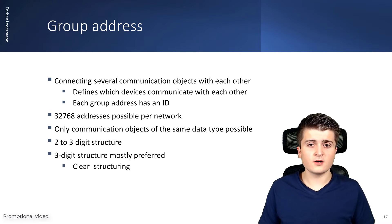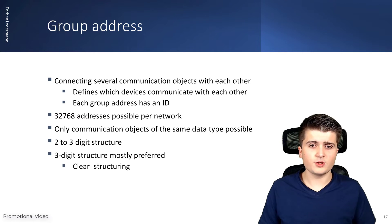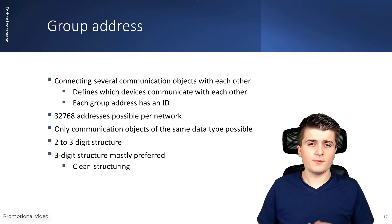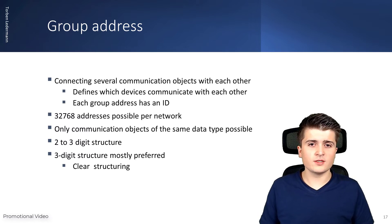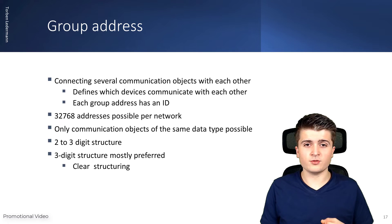You can only connect group objects that have the same data type. This makes sense because a switching actuator can do nothing with the information that the temperature sensor has measured 30 degrees Celsius. The switching actuator needs the information of switching on or off — a one-bit value, not a one or two byte value. The ETS will automatically detect whether you are trying to connect group objects of different data types and will prevent it by showing an error dialog.